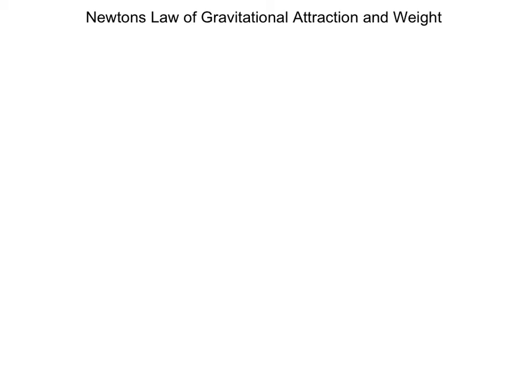Now we're going to sidetrack a little bit and talk about Newton's law of gravitational attraction and weight. Newton's law of gravitational attraction is force equals the gravitational constant times the mass of one object times the mass of a second object divided by the distance they are apart squared. If we apply this to Earth, and we take this mass as the mass of Earth and this mass as the mass of what's being attracted to the Earth, we can take this whole part, and that is going to equal G.